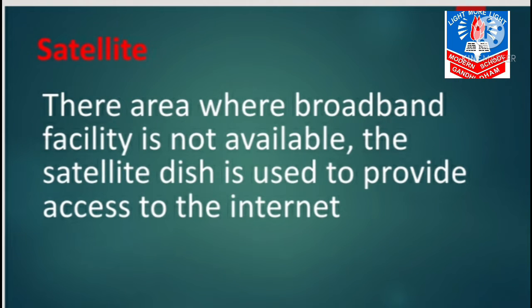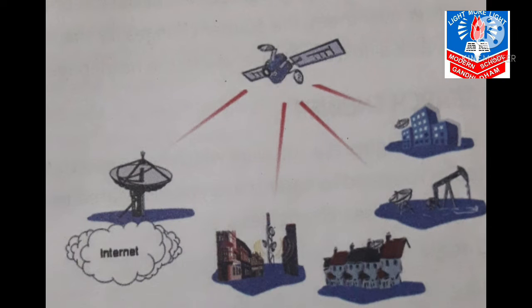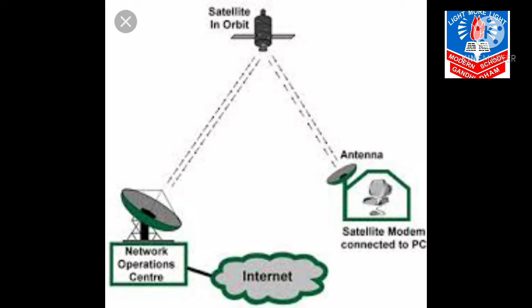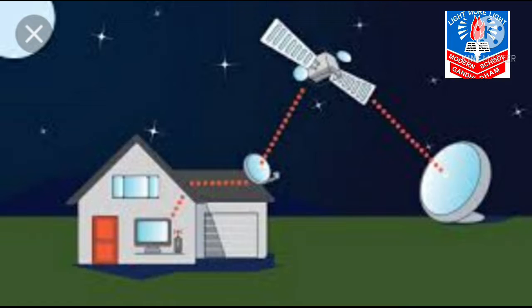Moving further — satellite. There are areas where the broadband facility is not available. In those areas, a satellite dish is used to provide access to the internet. Let's see the image of the satellite — you can see how the satellite is providing the internet to us.